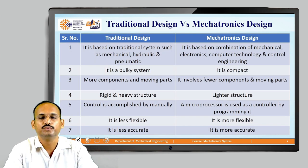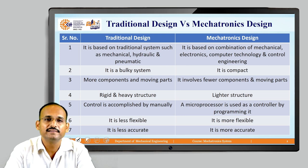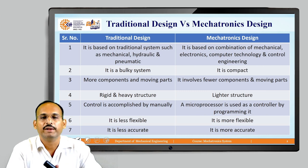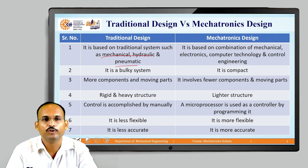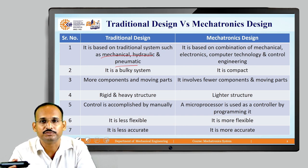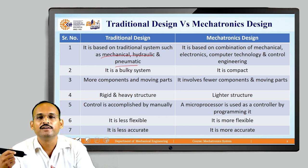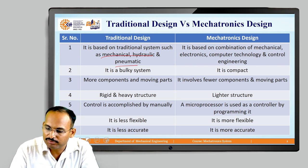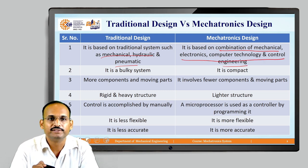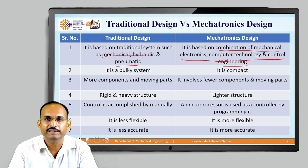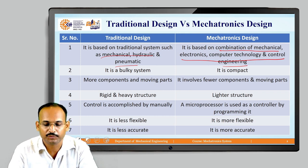Comparing the two designs: traditional designs are made up of mechanical, hydraulic, or pneumatic systems, while mechatronic systems are integrated systems based on a combination of mechanical, electronics, computer technology, and control engineering. Let us look at the major differences between traditional design and mechatronic design.